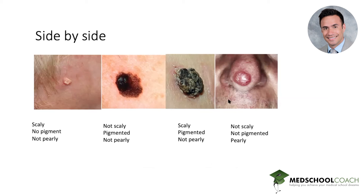Looking side by side and comparing and contrasting gives you the big four. They commonly appear in the same vignette as answer choices, but they're very easily distinguished from each other. This is the kind of question where if you lock this information down and have it readily accessible by practicing a few times, you'll be able to answer it in 10 to 15 seconds and use that time for another question stem that requires a lot more critical thinking.